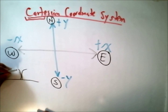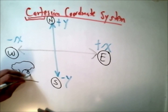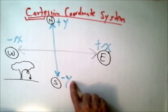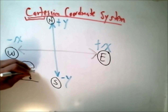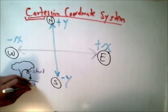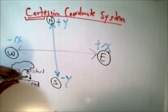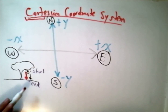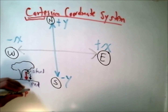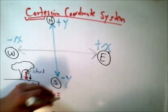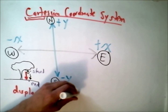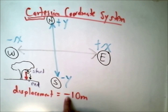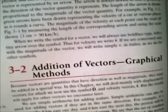For example, if an apple fell 10 meters out of a tree, I would write negative 10 meters — the negative sign tells me the displacement is going in the downward direction. So that covers displacement. Chapter 3, Section 2 says we can add vectors graphically.